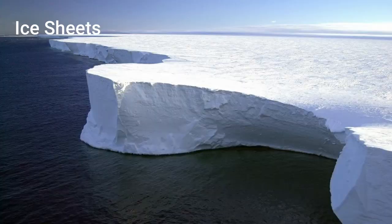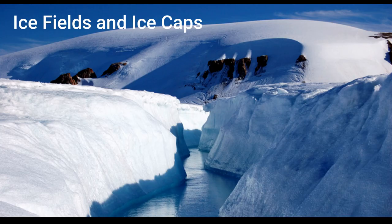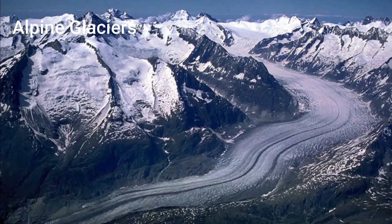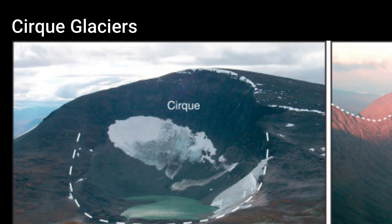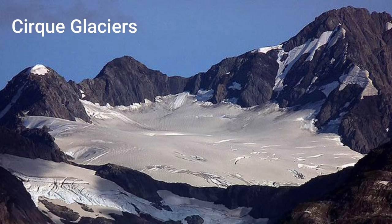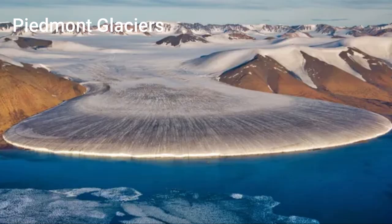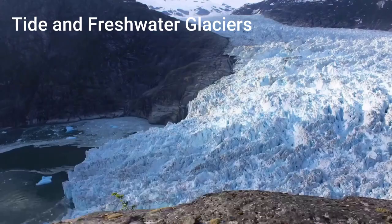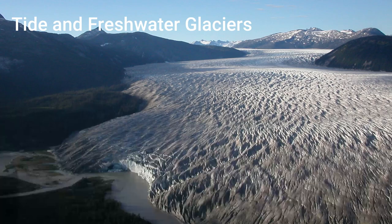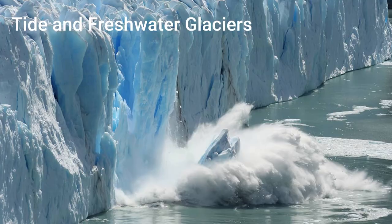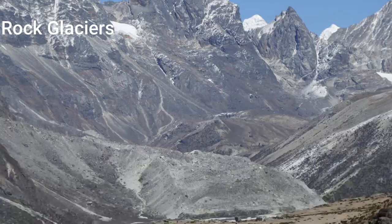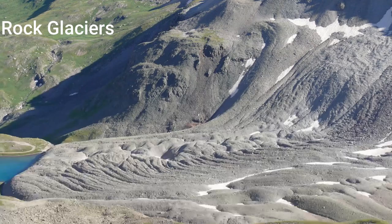There are also a few different types of glaciers: ice sheets, which cover both land and sea; ice fields and ice caps, which form at higher altitudes and are typically smaller; alpine glaciers, which originate in alpine mountains; cirque glaciers, which form sort of bowls often filled with melt water; valley and piedmont glaciers, which flow down from alpine areas where they melt at lower altitudes; tidewater and freshwater glaciers that form on land but dissipate in bodies of water — small pieces of these can break off and make icebergs; and lastly rock glaciers, filled with rocks and debris, which makes them sturdier and means they melt a lot slower.